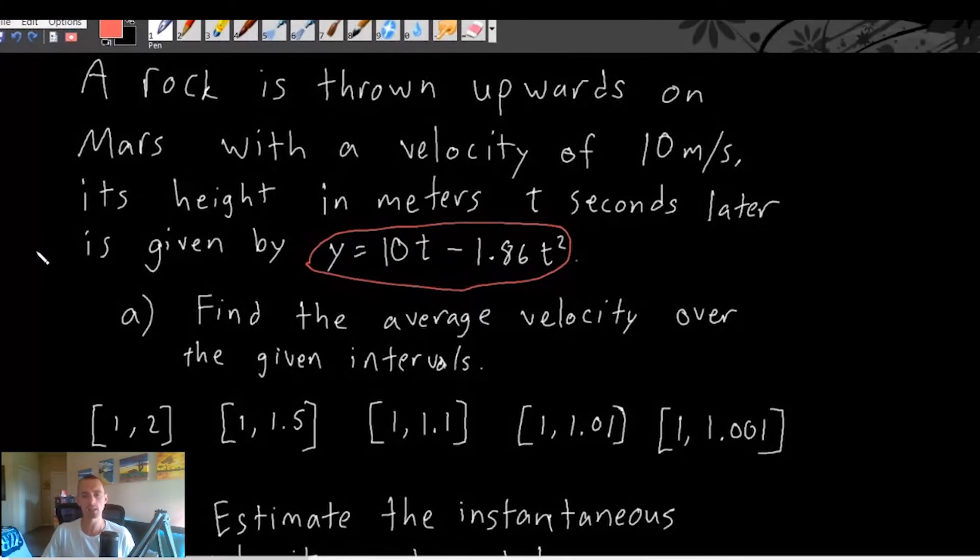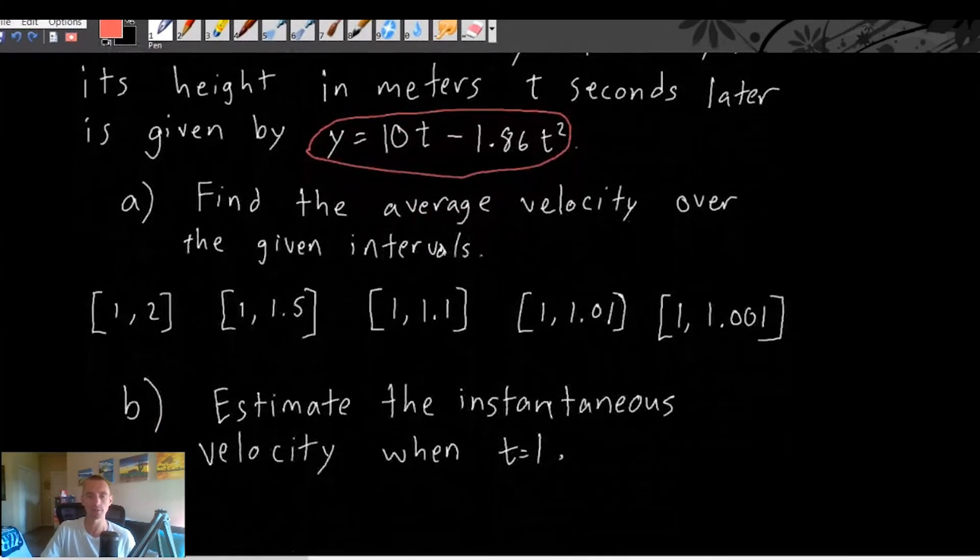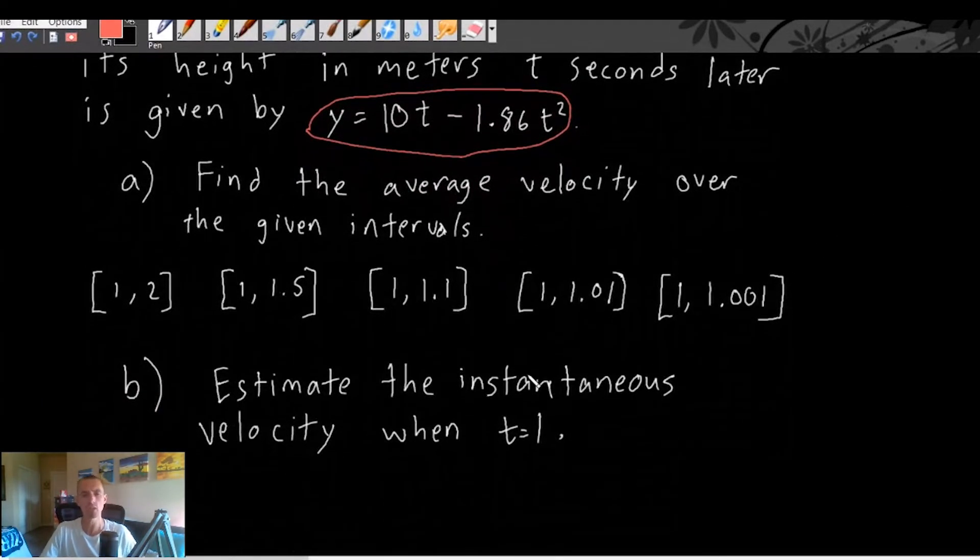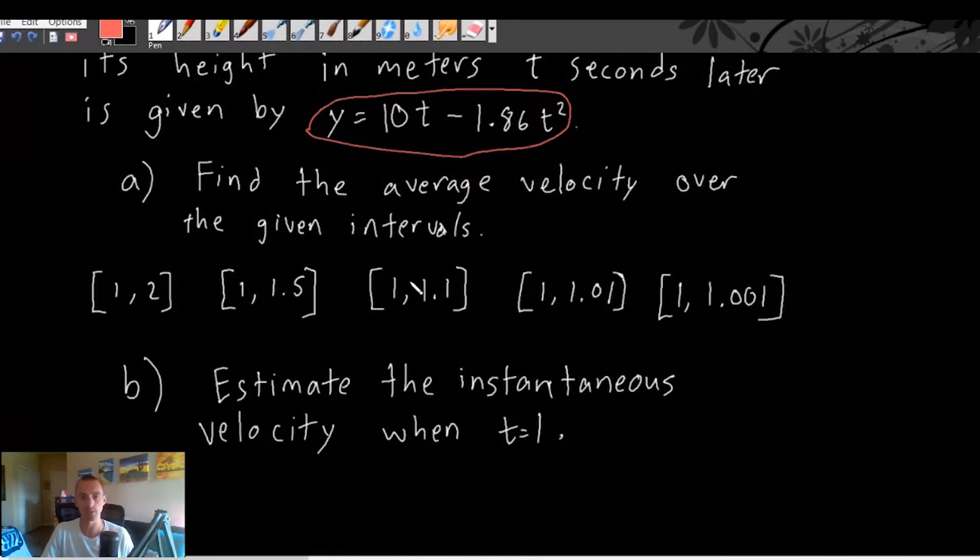So instantaneous velocity, you can see in part B here, it does ask about instantaneous velocity. It's asking, well, we're gonna estimate it using this average velocity, but what it's getting at is for us to figure out what is the instantaneous velocity at T equals one.